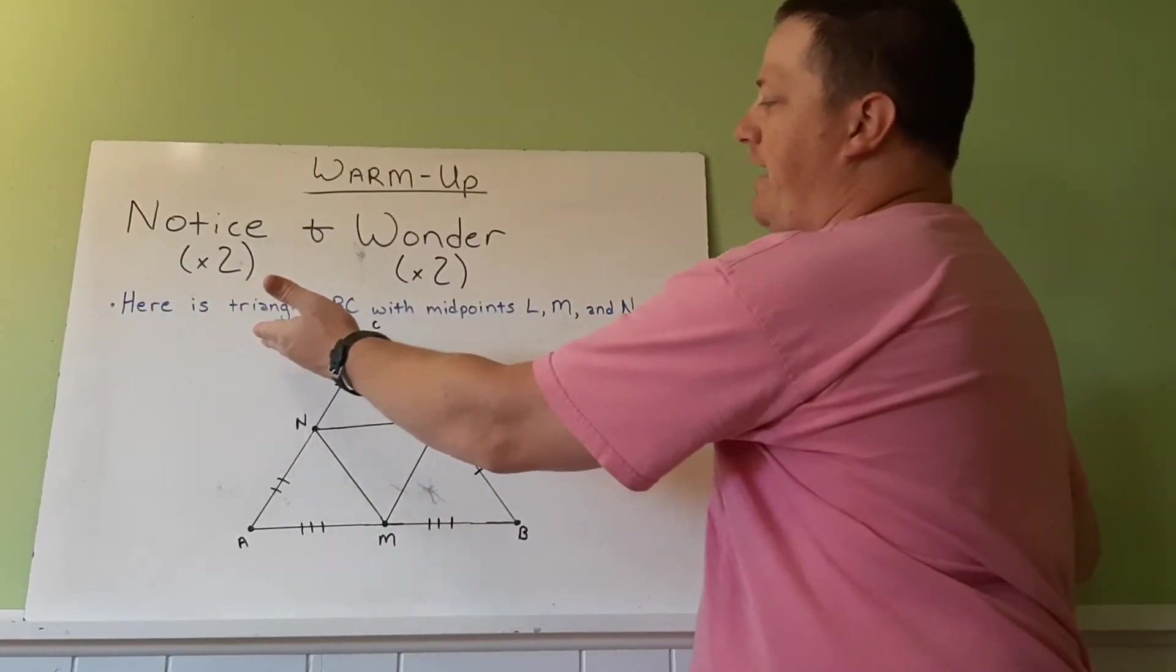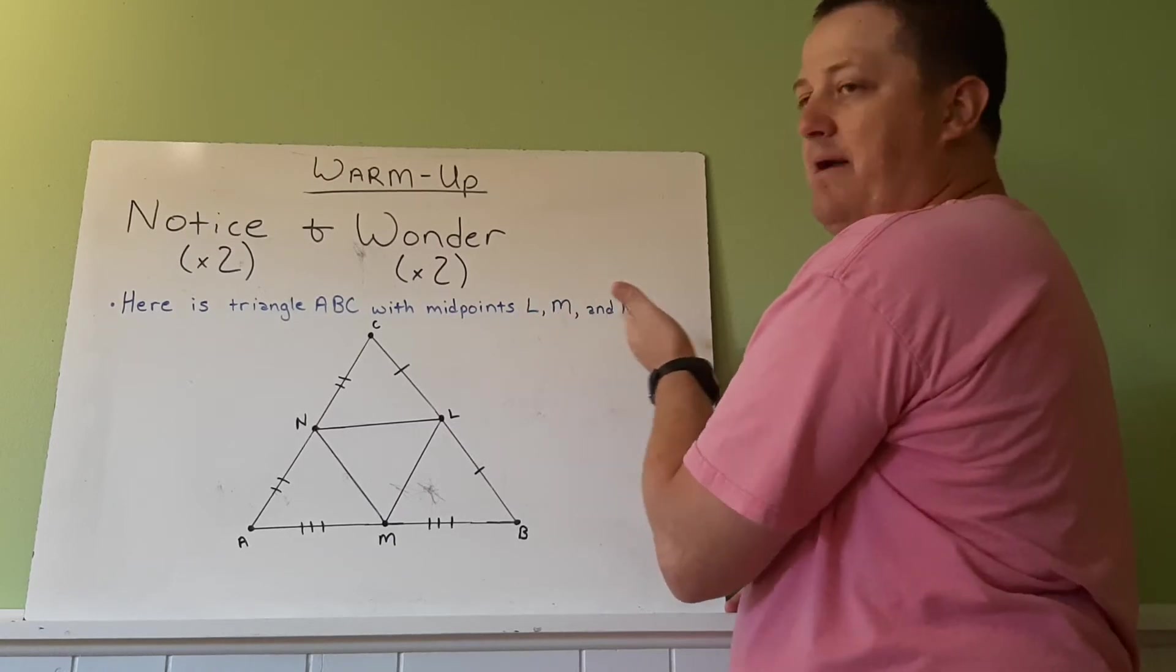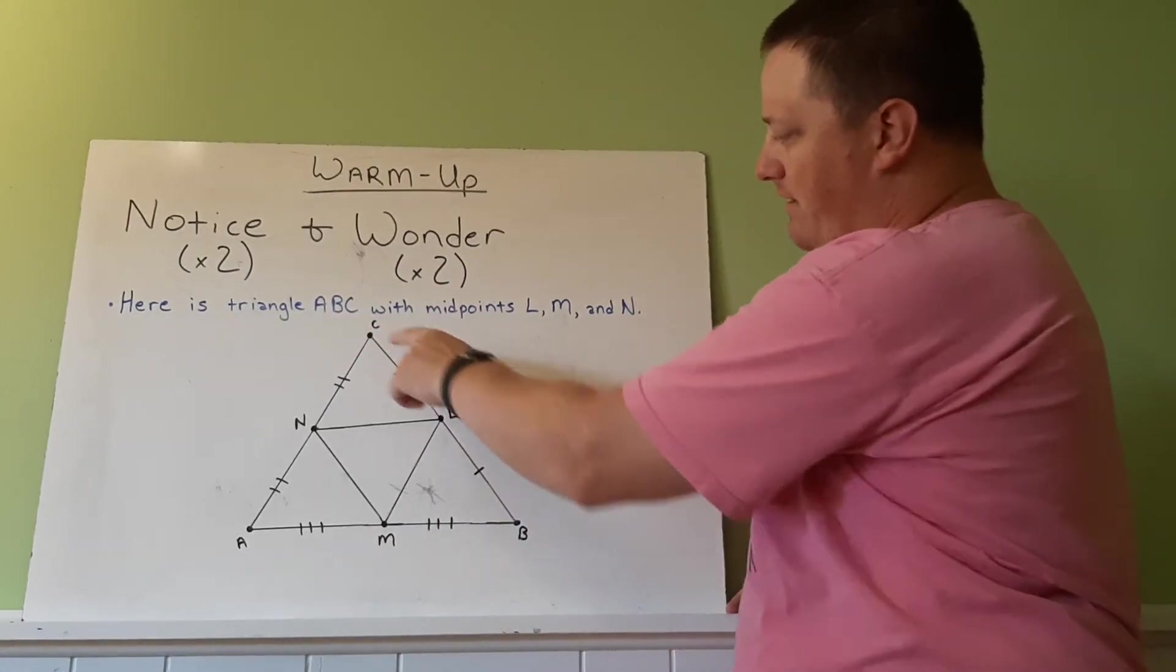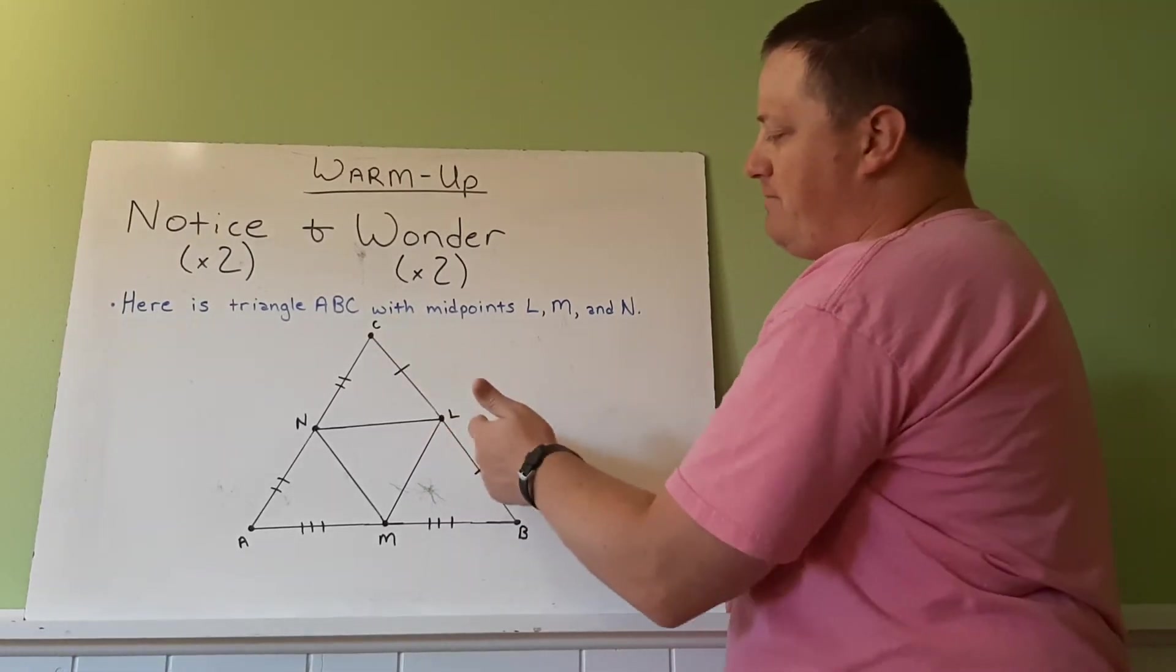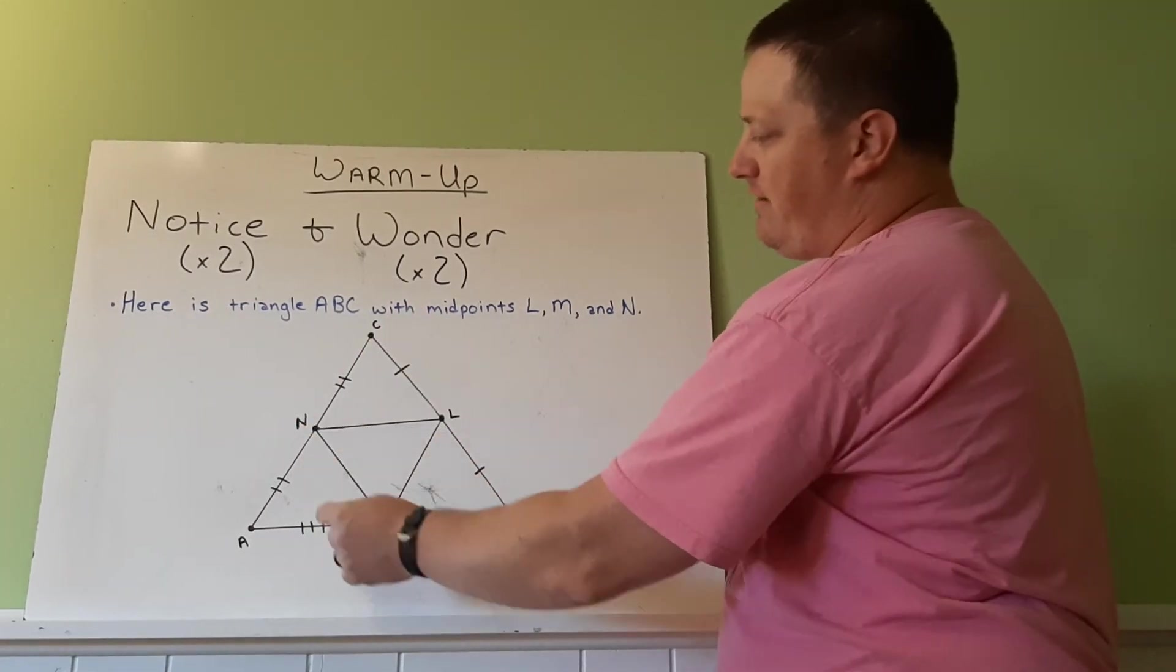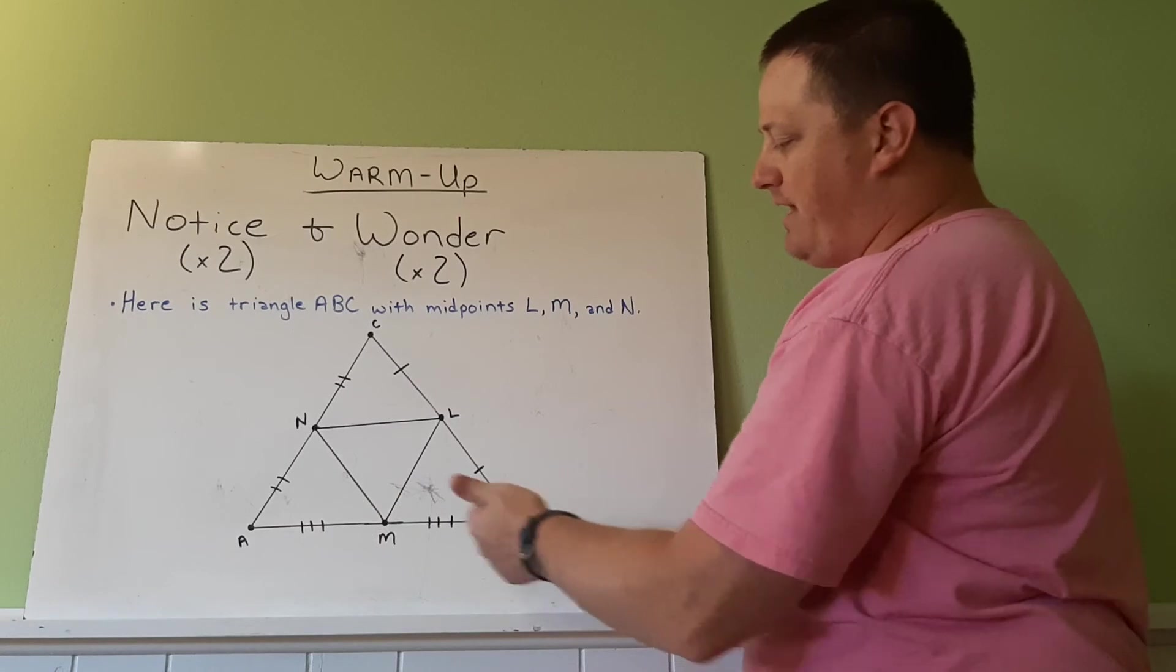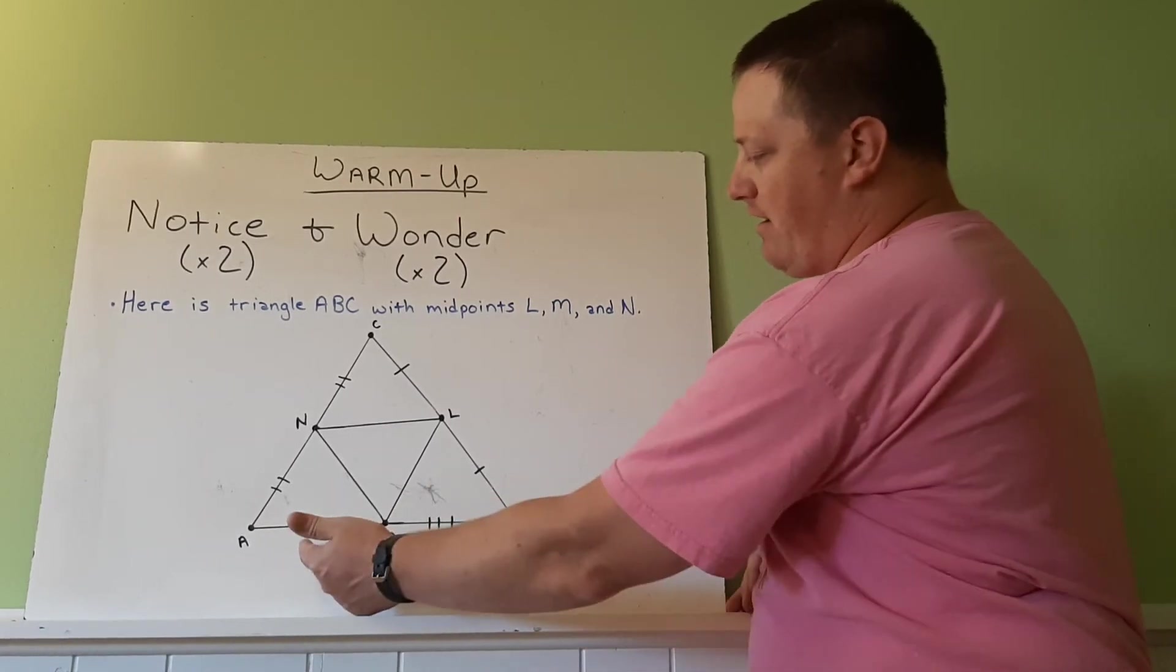So what we have here is triangle ABC with midpoints L, M, N. We have L as the midpoint of BC here. Notice both sides are marked congruent. Therefore, it's the midpoint. Then we have AC and N is in the middle. So both parts are marked congruent, splitting the side in half. And we have AB with the midpoint M, splitting A to M and M to B equal.